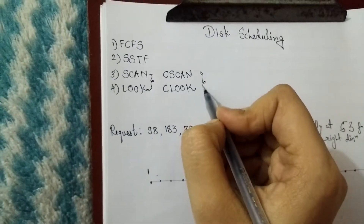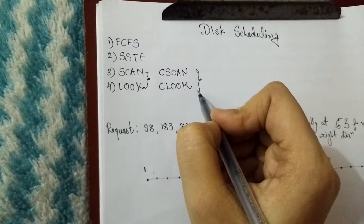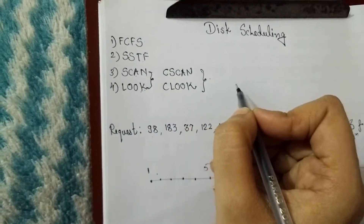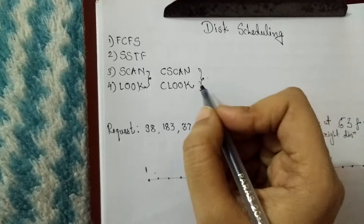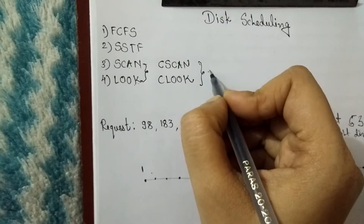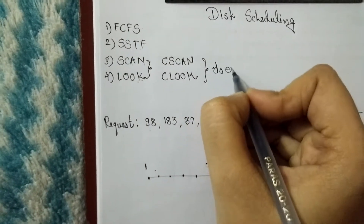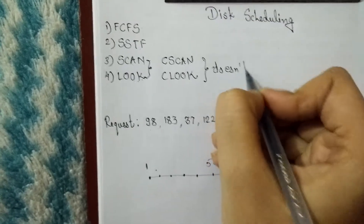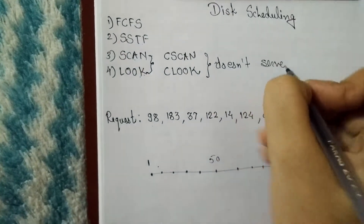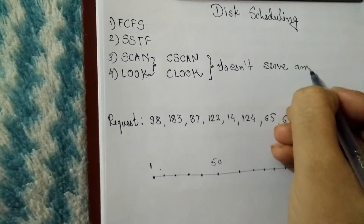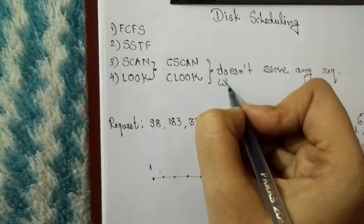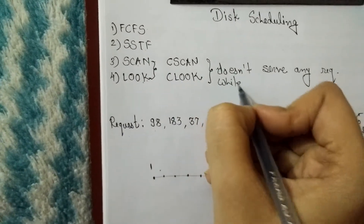Circular SCAN and Circular LOOK are similar in that they will not serve any request while returning — they don't serve any request while coming back.